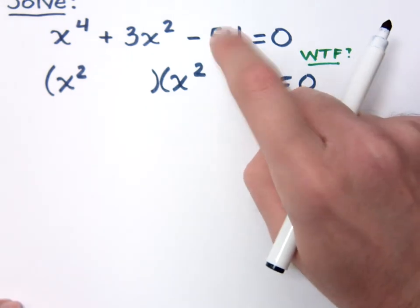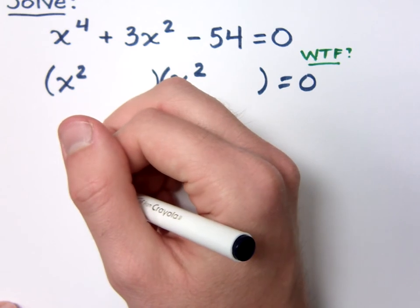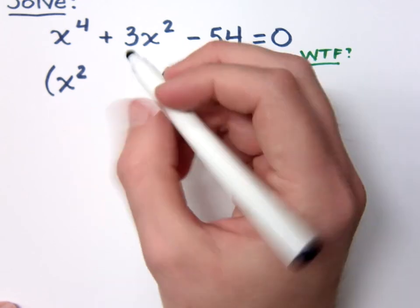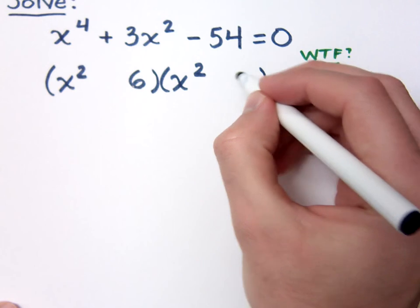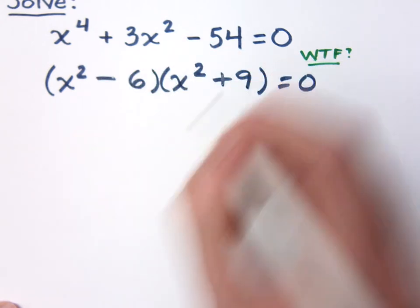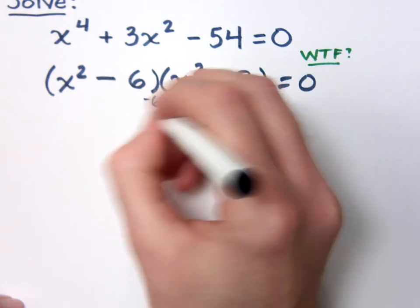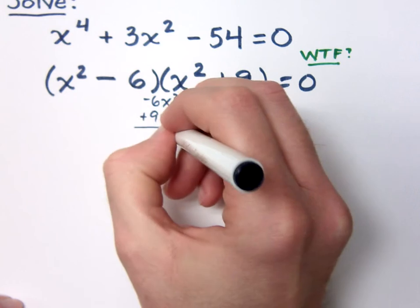So, how would you factor the negative 54? Six and nine is okay, but I need signs. Negative six and positive nine. Does that work out? That gives me a negative six x squared in the middle, a positive nine x squared on the outside.